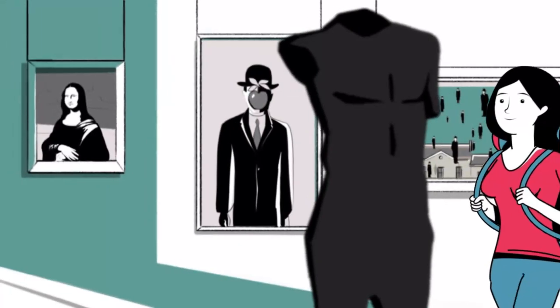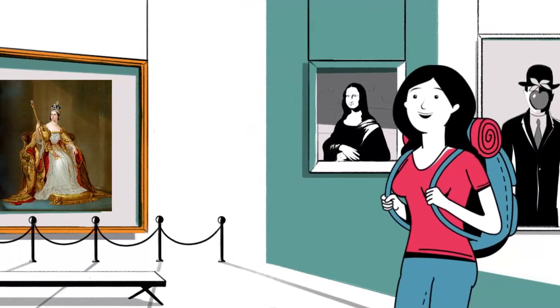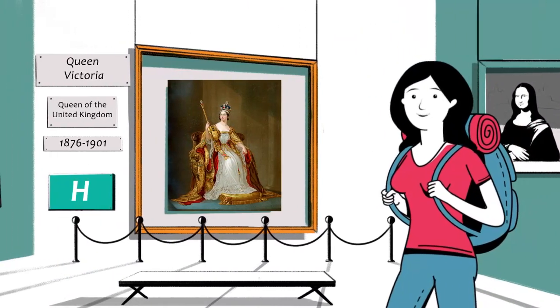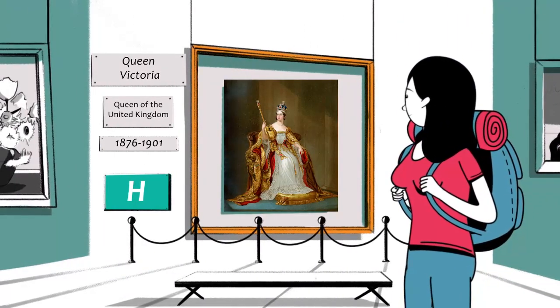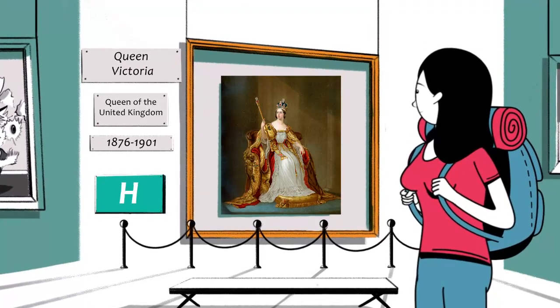We also discovered that you share a common ancestor with at least one notable person whose DNA has been analyzed. One such person who shared your H haplogroup was Queen Victoria, Queen of Great Britain and Ireland, from 1876 to 1901.